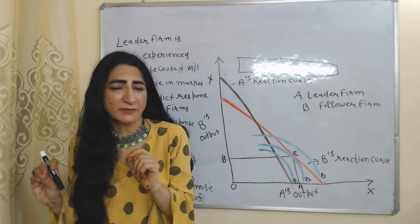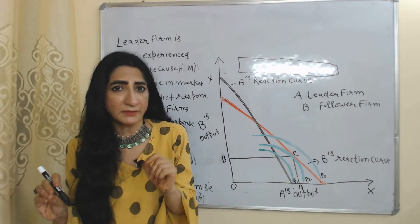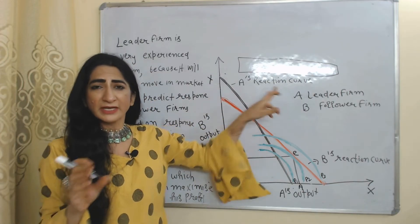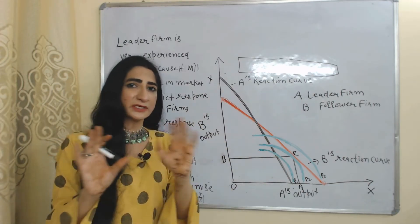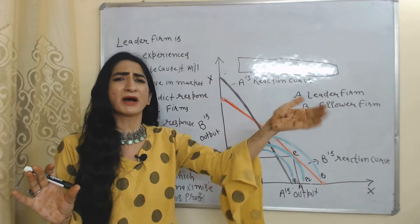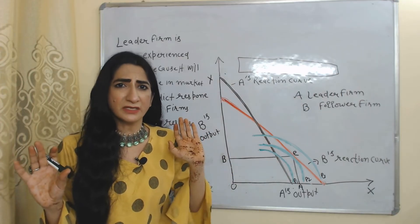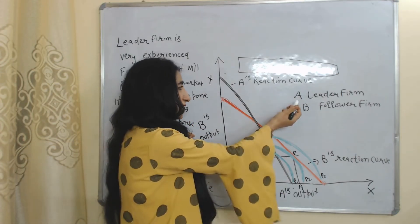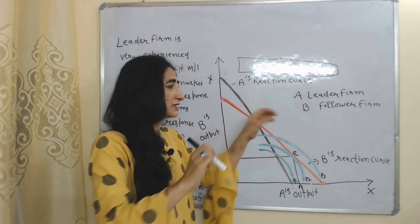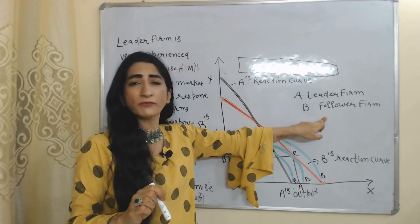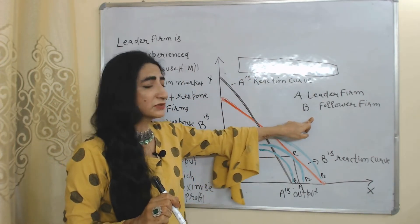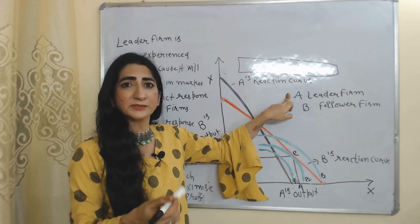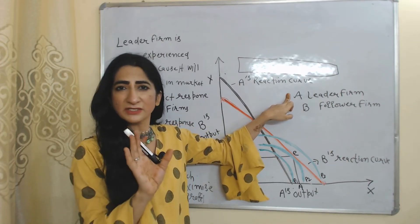One important thing about this model: the leader firm A is a very experienced firm because it has been in the market for many years. Based on their experience, firm A can predict in advance the response of firm B, and based on that response, A can decide its profit-maximization output.